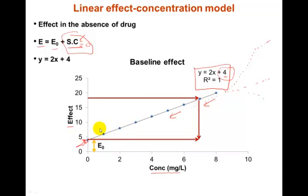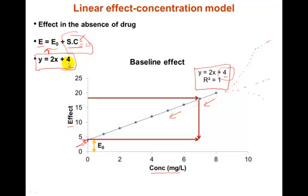In this linear effect-concentration model, we have the equation E = E₀ + S times C. Correlating with Y = 2X + 4: Y corresponds to effect on the Y axis, E₀ is the intercept which is 4 here, and 2 times X means 2 times the concentration, where 2 is the slope S.